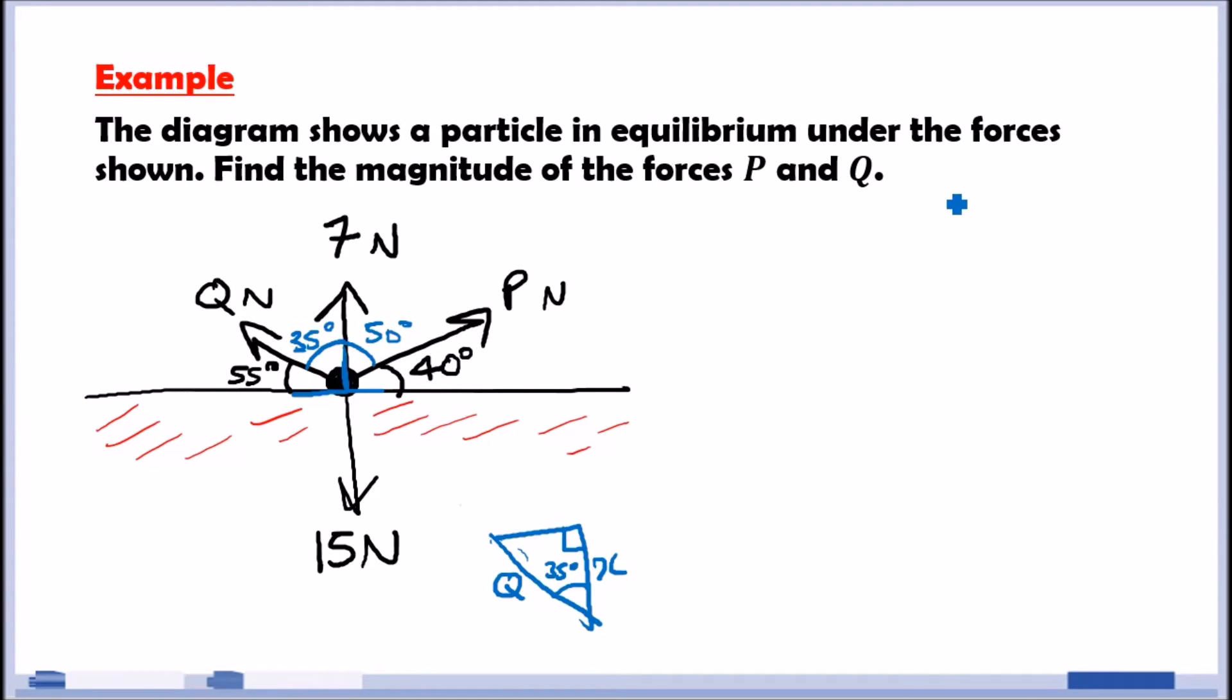Using SOHCAHTOA, we need to see what we're interested in. Of course, the angle is here, so this is opposite, and this would be adjacent and hypotenuse. So, we have to use SOHCAHTOA, which is cos. Cos 35 equals adjacent X over hypotenuse Q. Therefore, when we resolve vertically, we always take the cos of the force itself. So, Q cos 35. And I'll show you how this works in terms of formation.